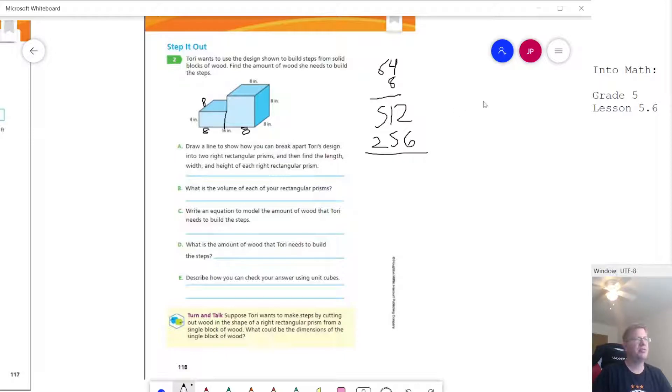We could also do 32 times eight, which might be a little bit easier than doing 64 times four. So that gives us a total of eight and then six and seven. So 768 would be the volume. These would be our respective volumes. So this one would go with this one, 256 would go with the smaller one, and then our total would be 768.